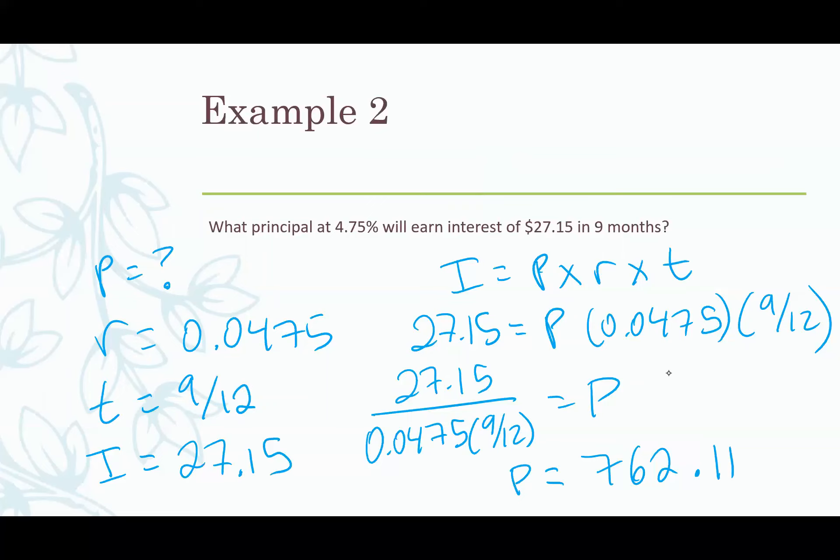Our rate is 4.75% so we write it as 0.0475. Move the decimal place two to the left. Our time is nine months. Remember we had to write it as years so we write this as 9/12. And lastly our interest is $27.15. We know what our I is. So using our simple interest formula here, I equals P times r times t, just plug in what we know. We know I, we don't know P, we know r, we know t. So now we just have to rearrange to get P on its own.